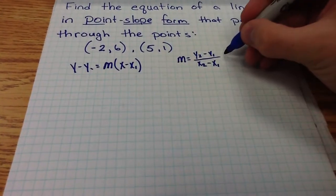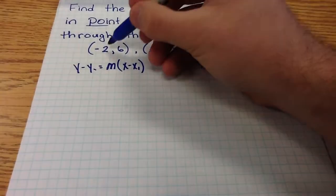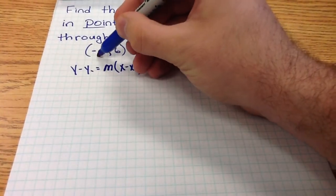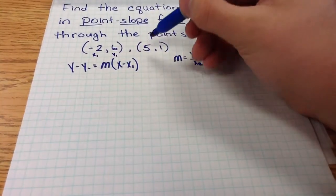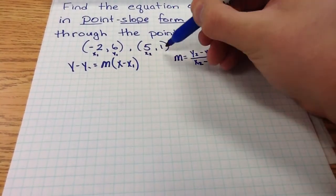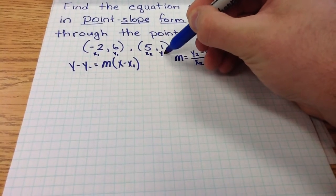And if we plug in our specific values, remember that negative 2 is our x1, 6 is our y1, 5 is our x2, and 1 is our y2.